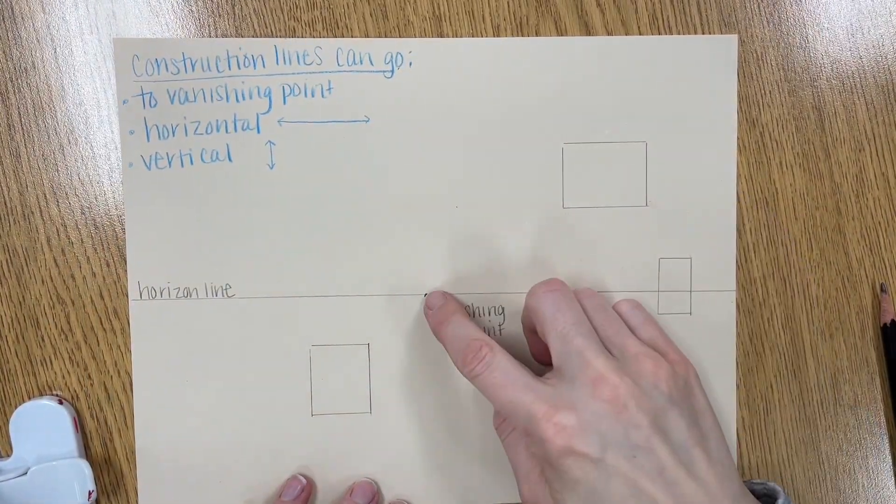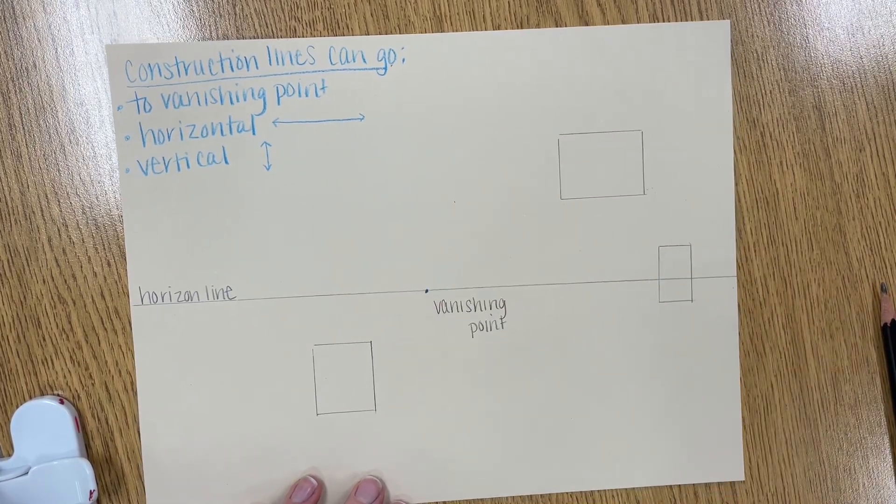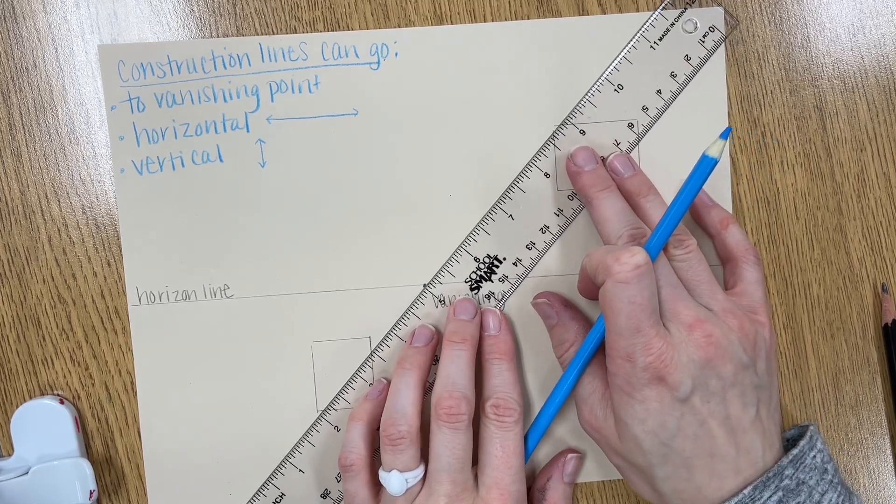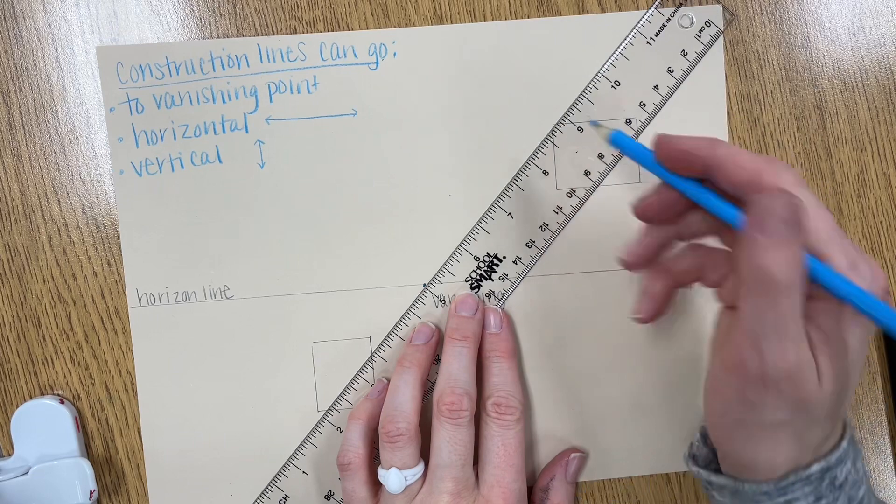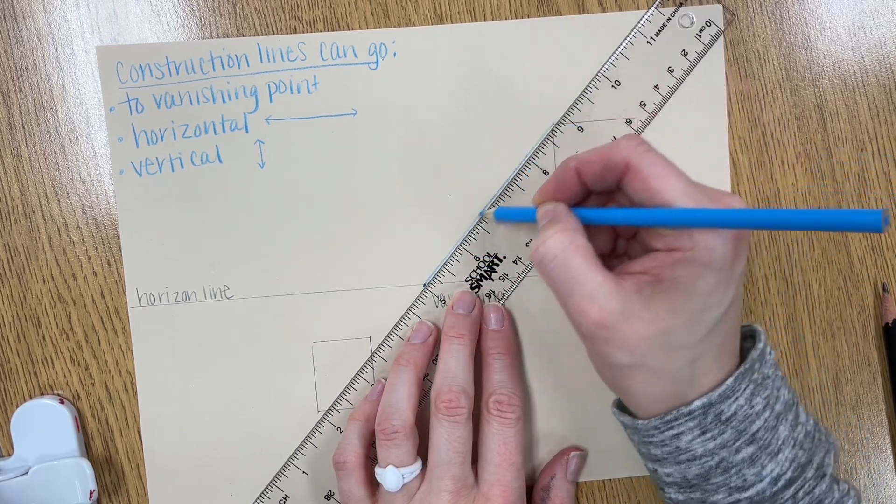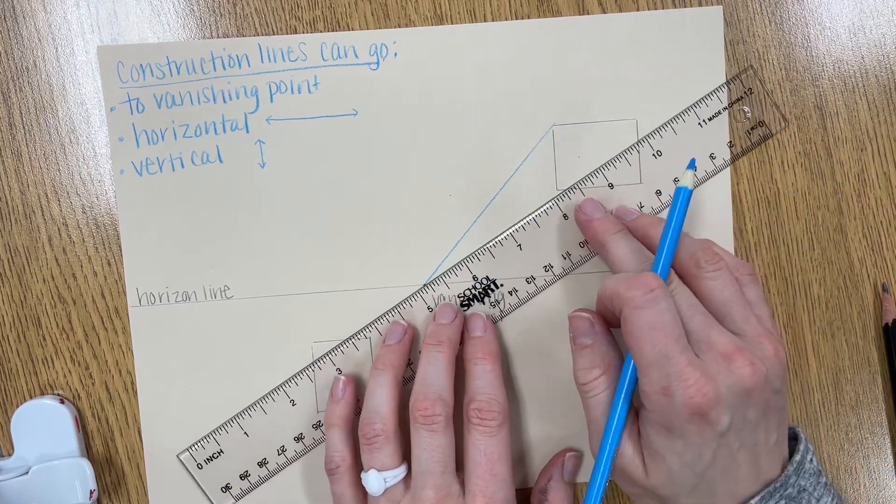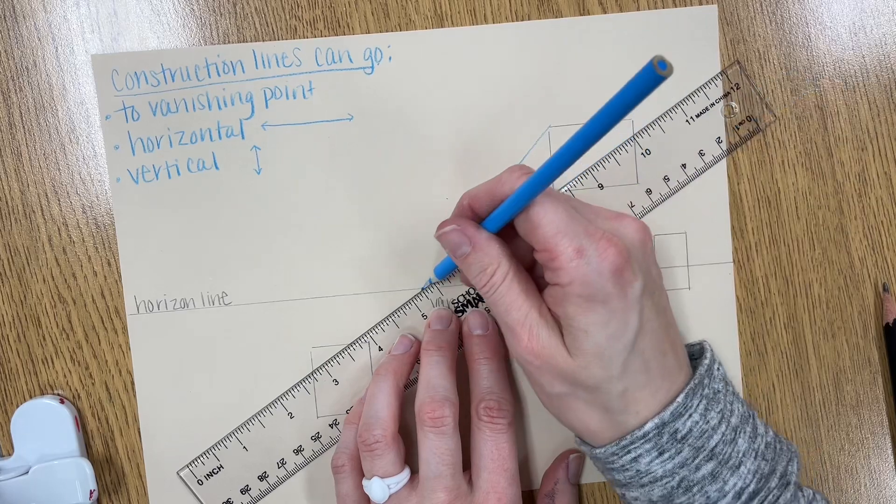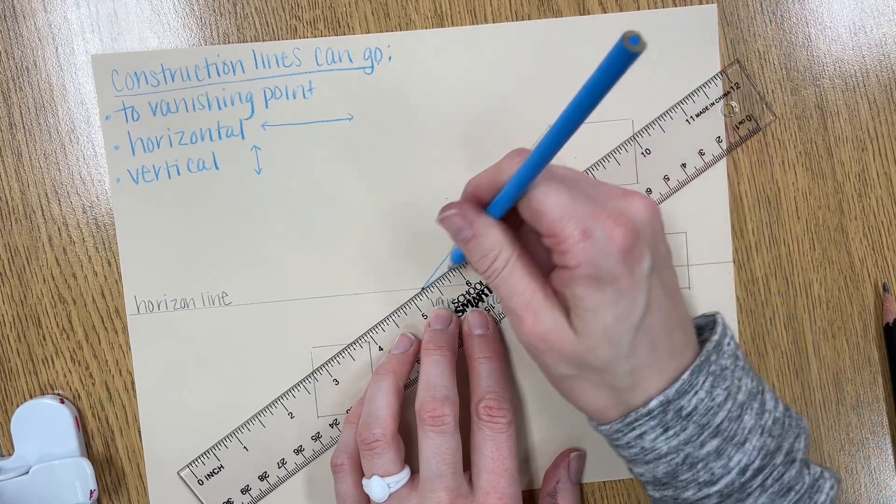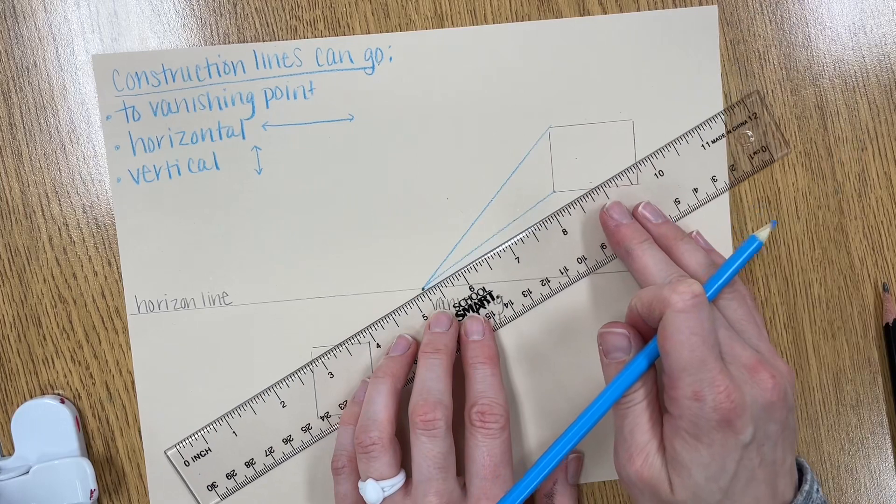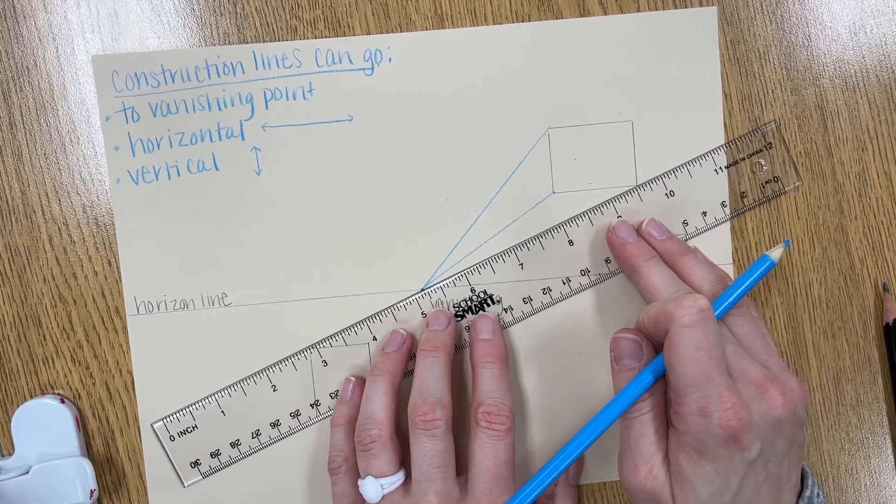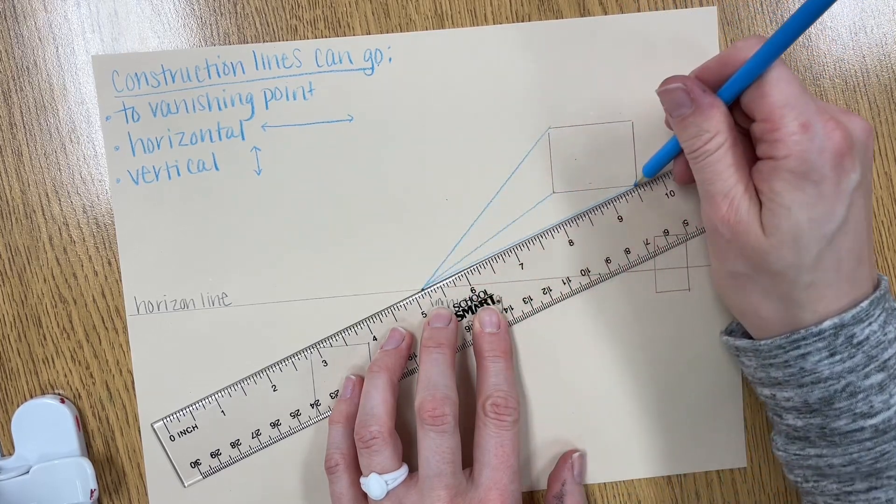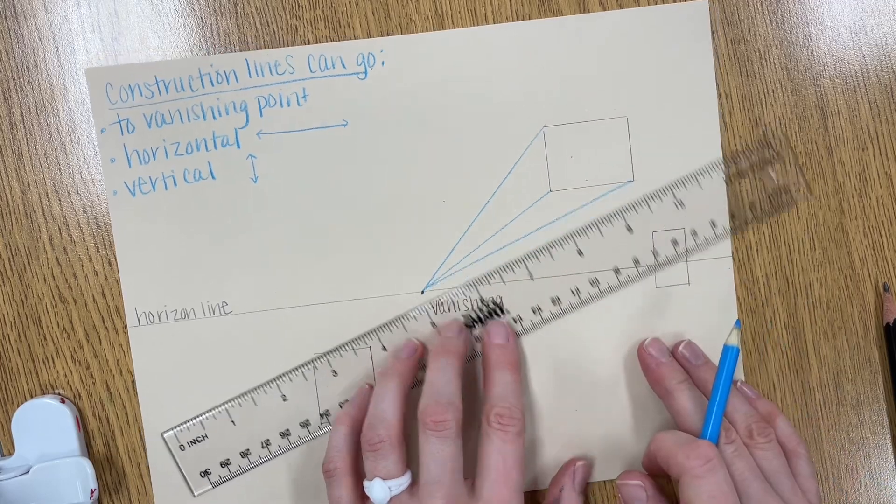We will start adding the construction lines to help make our boxes look three dimensional. In order to do this you're going to create every line that goes from a corner all the way to a vanishing point. It's really important that these are lined up precisely in order for this to work correctly. So we'll find the corner and then gradually move your ruler so that the point and the corner are lined up. For this demonstration I'm using a blue colored pencil so that you can see the difference with my construction lines and the box I created. But I would suggest that you use a regular pencil and draw very lightly as you go so it's easy to erase.